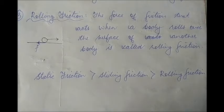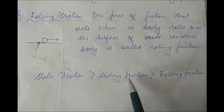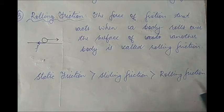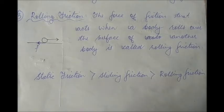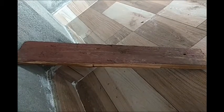What we need to understand is that static friction is greater than sliding friction, and sliding friction is greater than rolling friction. So of all the kinds of friction, rolling friction has the least value. That is why it is easier to roll a body than to slide it.